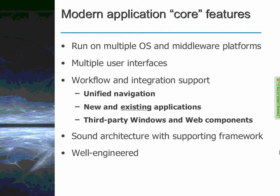Let's move down a level now and look at it more specifically from the IT perspective. If we were to say what are the core features that a so-called modern application would have, this would be my short list. First, it needs to be able to run on multiple operating systems and middleware platforms. That may not be an immediate need, but in terms of minimizing risks and anticipating changes that may occur, this is certainly a core capability. Multiple user interfaces — web interfaces, smart clients, mobile — are now key to extending the reach of the application and the ability for people to fit the application into the way they work.